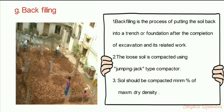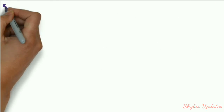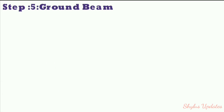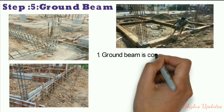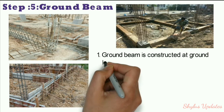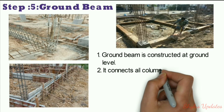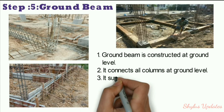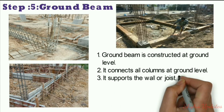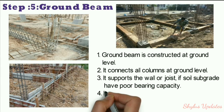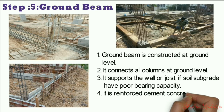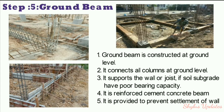Step 5: Ground beam. The ground beam is constructed at ground level and connects all columns at ground level. It supports walls or joists where the soil substrate has poor bearing capacity. It is a reinforced cement concrete beam provided to prevent settlement of the wall.